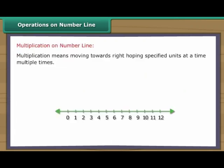Thus, seven units remain when we remove four units from eleven units. Multiplication means moving towards the right, hopping specified units at a time, multiple times. For example, two into five: start from zero, move two units at a time to the right, make five such moves. You will reach ten. So we say, two into five is equal to ten.